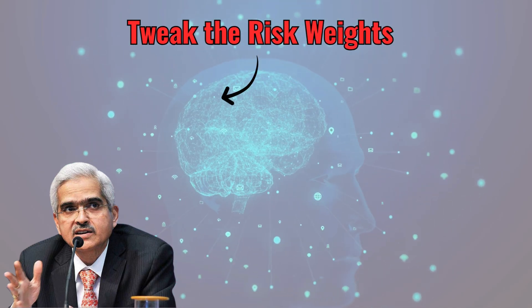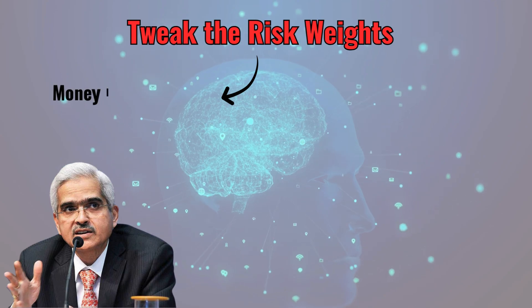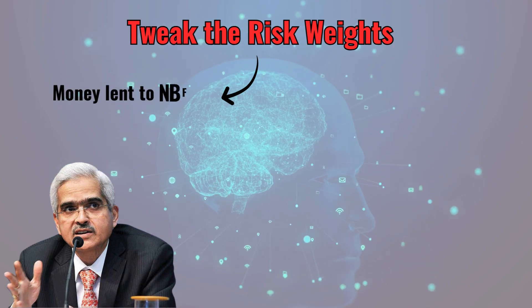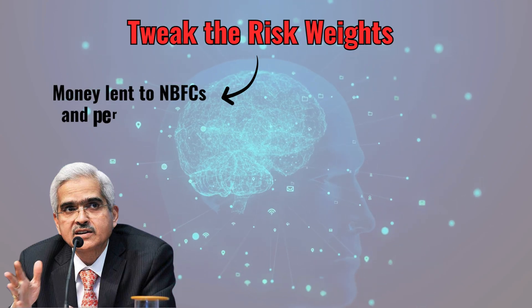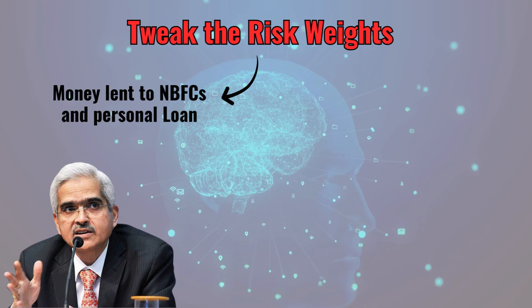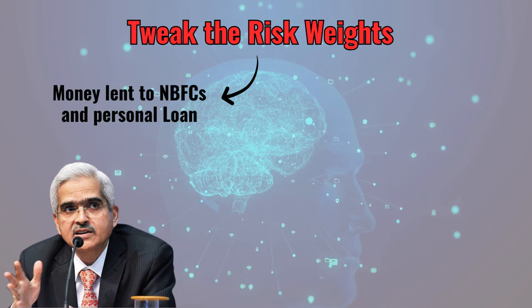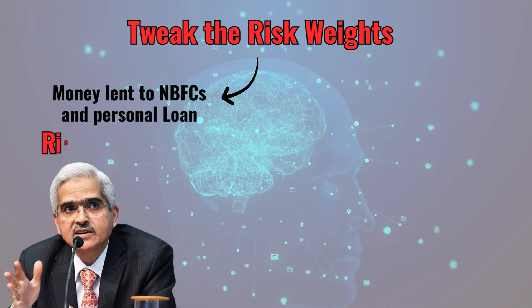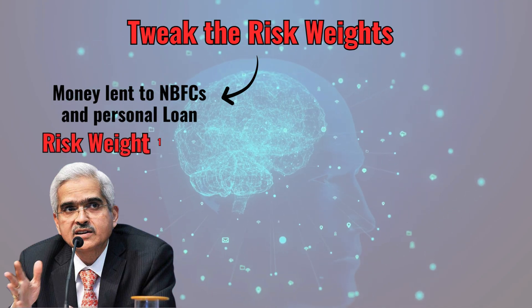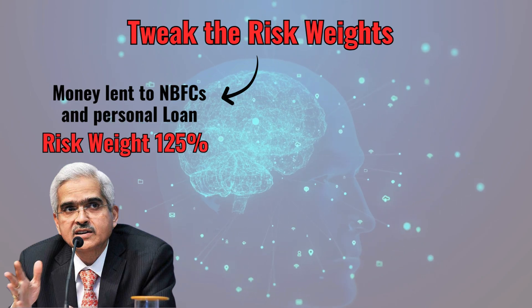One fine day last week, the central bank issued one of its dreaded circulars. It had decided to tweak the risk weights. From now, unsecured personal loans and even the money they lend to non-banking financial companies will have a risk weight of 125% instead of 100%.